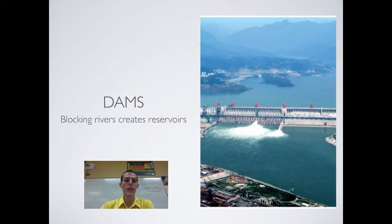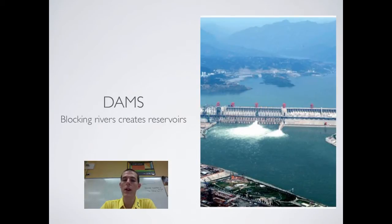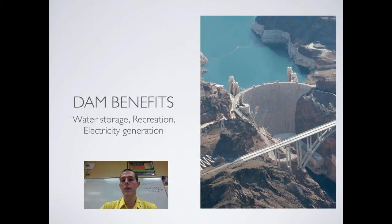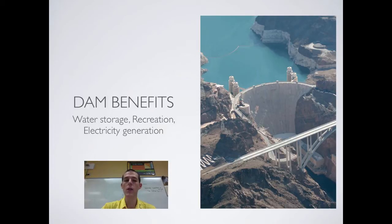The next strategy is a dam. As we talked about in the hydroelectricity video, a dam blocks the flow of a river to create a reservoir. Behind the dam is the reservoir; in front is the downstream portion of the river. As far as the benefits of dams, one of the major ones is water storage. The water stored in the reservoir can be used for agriculture, irrigation, or drinking water, allowing people to control when they use it.